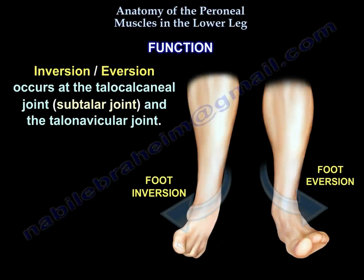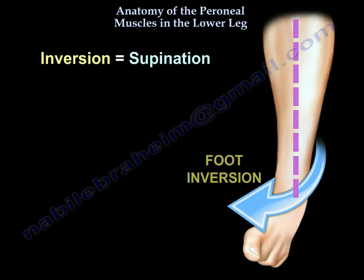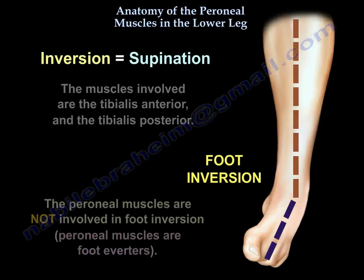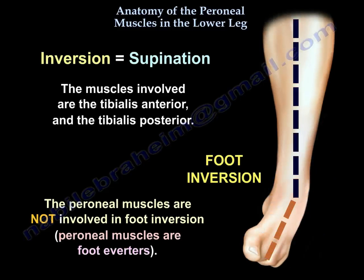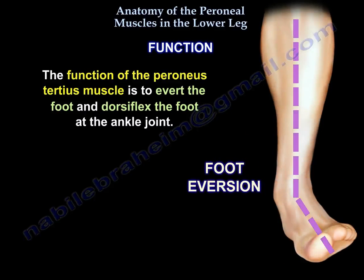Inversion and eversion occur at the talocalcaneal joint, which is the subtalar joint, and at the talonavicular joint. Inversion means supination. Muscles involved in foot inversion are the tibialis anterior and the tibialis posterior. The perineal muscles are not involved in foot inversion — they are foot everters. The function of the perineus tertius muscle is to evert the foot and dorsiflex the foot at the ankle joint.